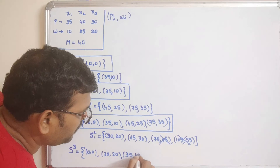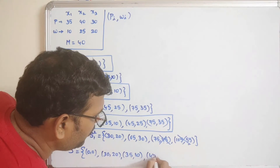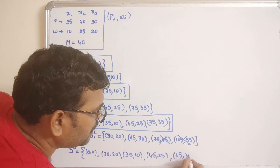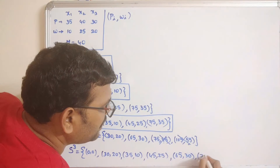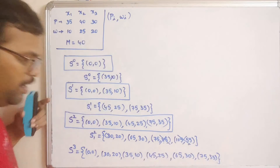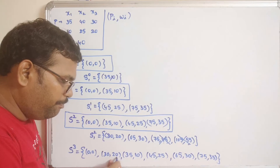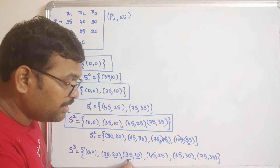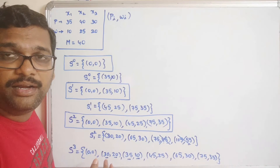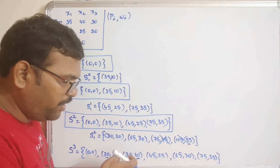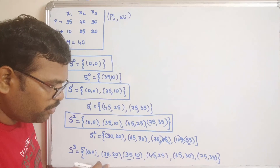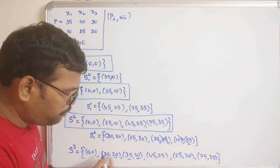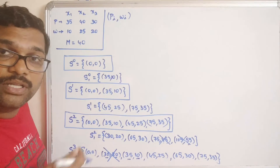Combining the remaining new pairs with S2: we have (0,0), (30,20), (35,10), (45,25), (65,30), (75,35). Now we check for dominance. With weight 20 we get profit 30, but with weight 10 we get profit 35 — less weight giving more profit means (30,20) is dominated by (35,10). We eliminate (30,20).